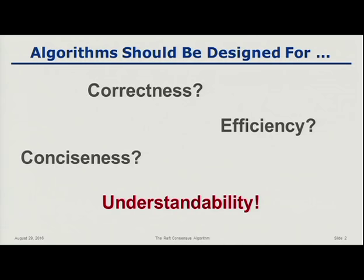I don't think this is commonly done in academia today. In fact, probably the opposite — we think the more confusing our algorithm is, the more clever we must be in order to create it. If we can actually make it work and it's super confusing, we must be really, really smart.